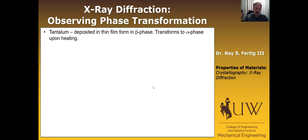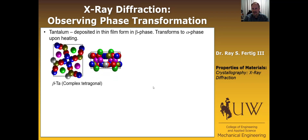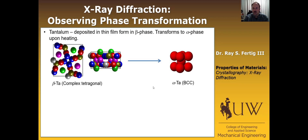Another example of using X-ray diffraction is observing phase transformation. This example comes from research my group did during my PhD at Cornell. We were depositing tantalum in thin film form in what's called the beta phase — a highly unusual metastable phase — and then transforming it to the alpha phase, which is BCC tantalum, during heating.